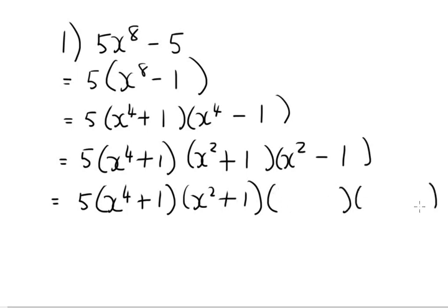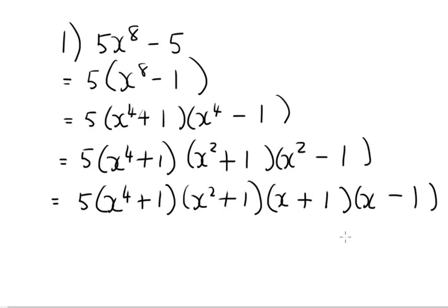So the 5 is written down as is, the x squared plus 1 is written down as is, and the only thing I'm going to factorize is x squared minus 1 — that becomes (x + 1)(x - 1). It seems like a long sum but all we're doing is looking out for difference of squares all the time. We started with common factor, then difference of squares, and we keep looking for different types of factorizations.